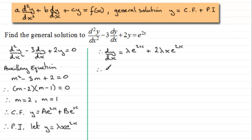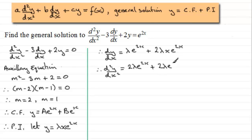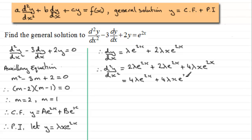We also need d²y/dx². If we differentiate lambda e to the 2x we get 2 lambda e to the 2x, and for 2 lambda x e to the 2x it's just twice the result we got for dy/dx. So we'll end up with 2 lambda e to the 2x plus 4 lambda x e to the 2x, which cleaned up gives 4 lambda e to the 2x plus 4 lambda x e to the 2x.